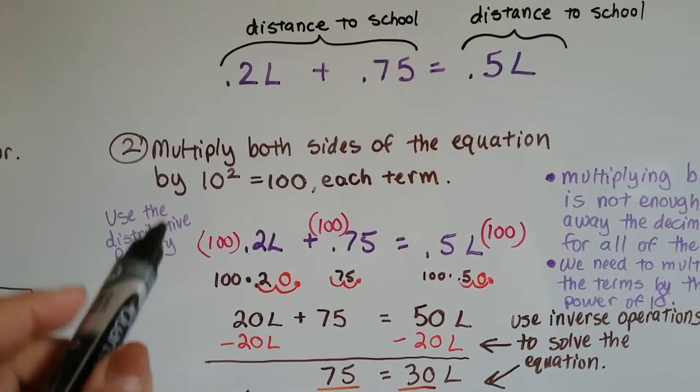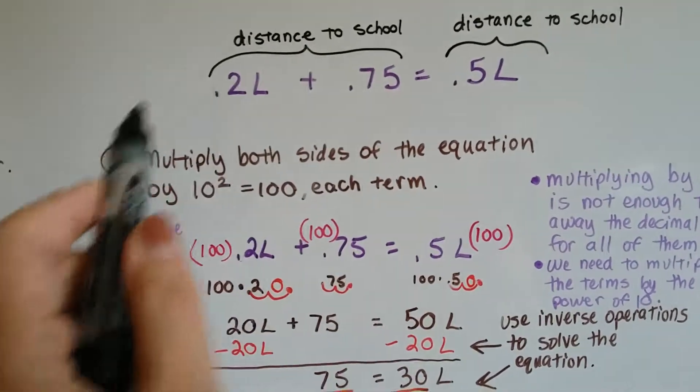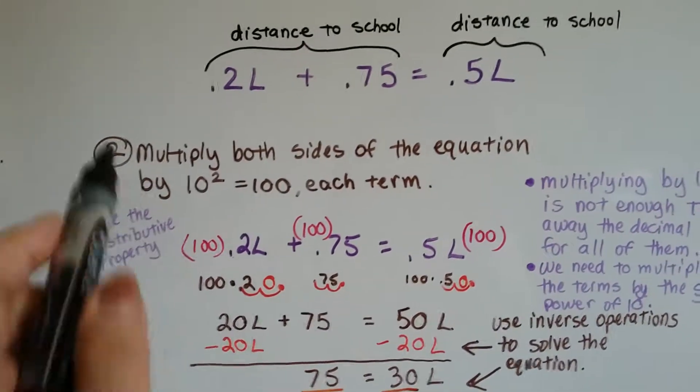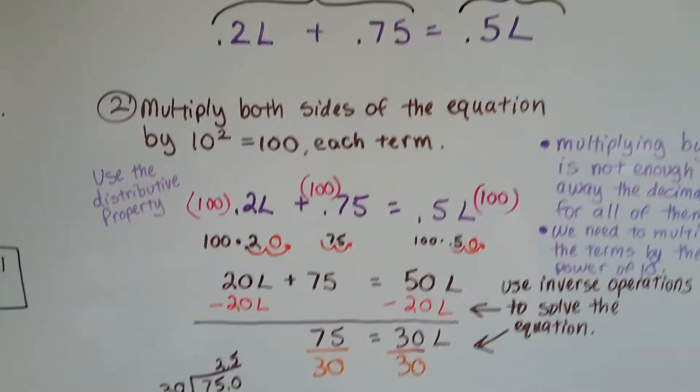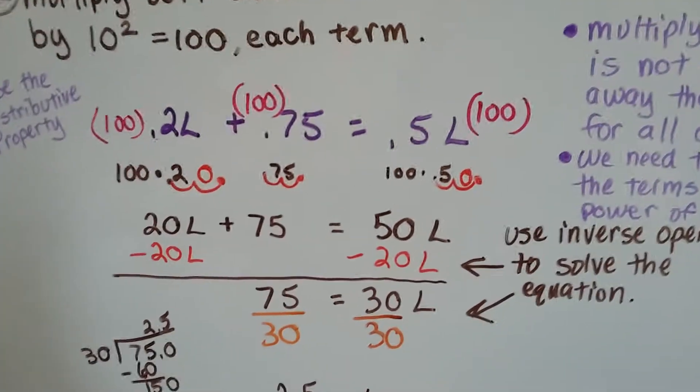And it's using the distributive property. We're going to go 100 times .2L, 100 times .75, 100 times .5. So it's the distributive property to each one. So I just like to draw a little 100 up like this on the equation, and then I can do it.